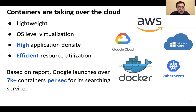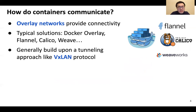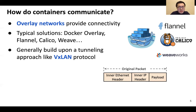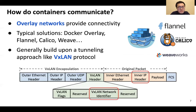But here's a question: how could these containers communicate with each other? Let me introduce the overlay network, which is a de facto technique providing customized connectivity among containers. Some example overlay solutions are Docker overlay, Flannel, Calico, and Weave. They are generally built upon the tunneling approach like the VXLAN protocol. VXLAN enables container network traffic to go through the physical network by encapsulating the original container packet within its host header. With a unique VXLAN ID, containers belonging to the same virtual network can be identified and isolated to communicate with their private IP address.